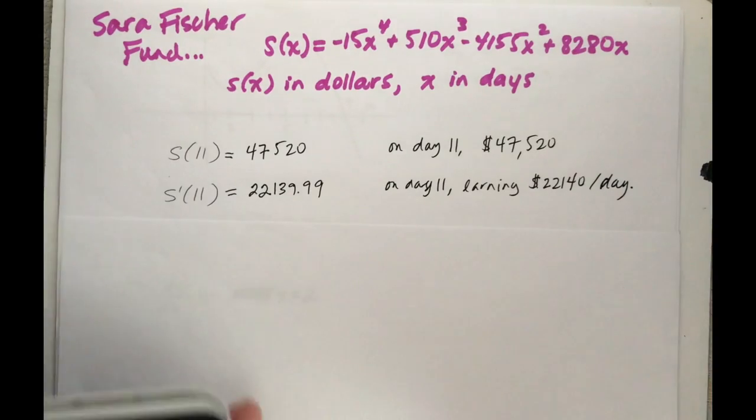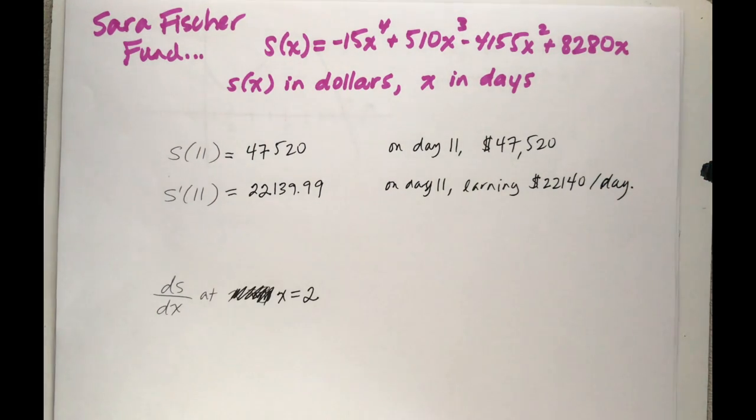That day, per day. So day 11, got 47 grand and I am increasing by 22 grand. So by day 12 I'm gonna be super stoked and I should be at about $69,000. So things are going extremely well on day 11.